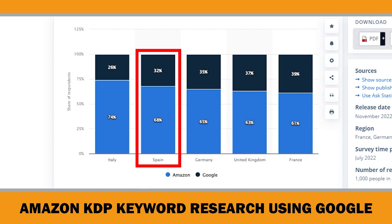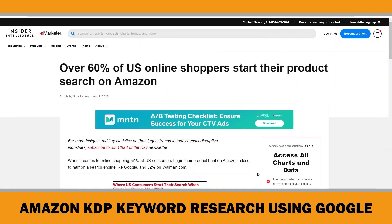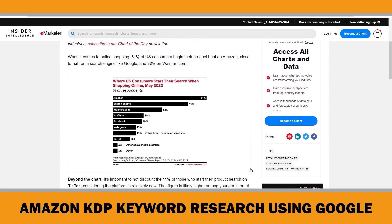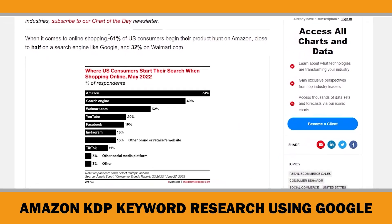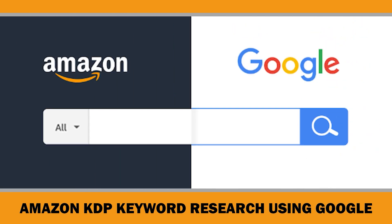Likewise, 68% of Spanish shoppers looked for products on Amazon's website and 65% of German respondents did the same. And according to Jungle Scout's Consumer Trends Report of Q2 2022, over 60% of US online shoppers start their product search on Amazon. It is obvious that the number of people starting their product searches on Google is actually going down over time.